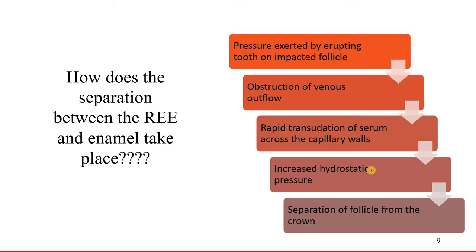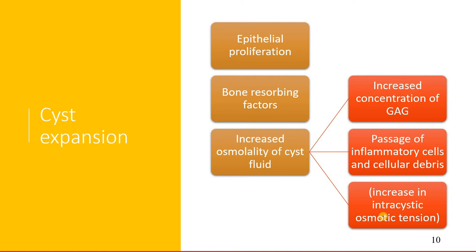How does this separation take place? The pressure exerted by an erupting tooth presses the epithelial component, and when this pressure is exerted the venous outflow in that region gets blocked. There is a rapid transudation of serum across the capillaries, which accumulates and exerts hydrostatic pressure causing separation of the follicle from the crown. The fluid starts accumulating because of the eruptive force and obstruction of venous outflow.